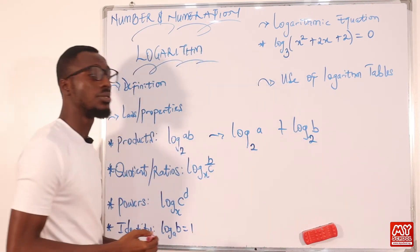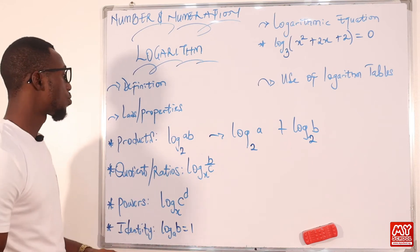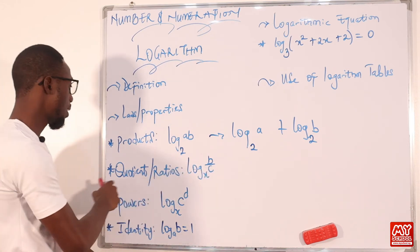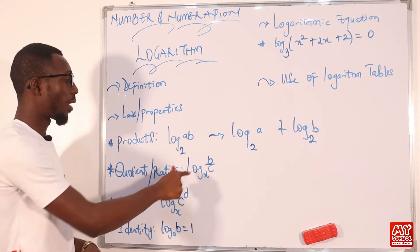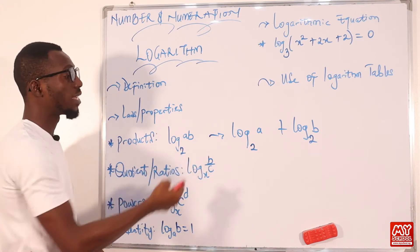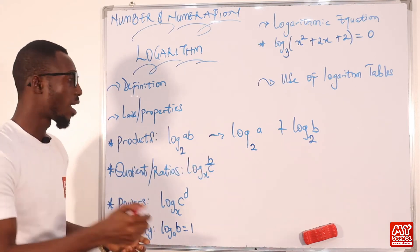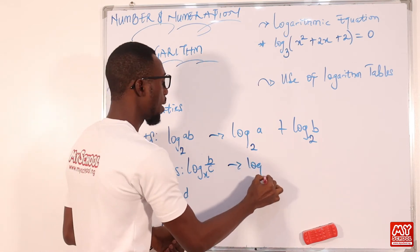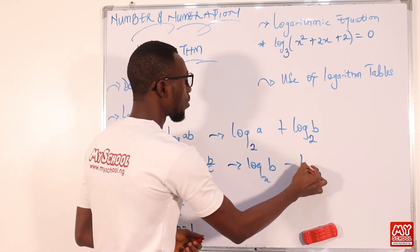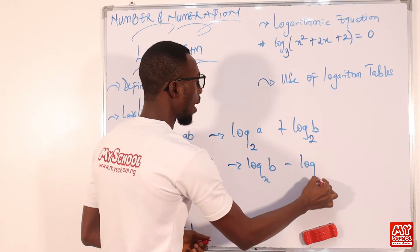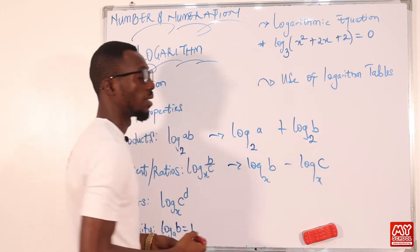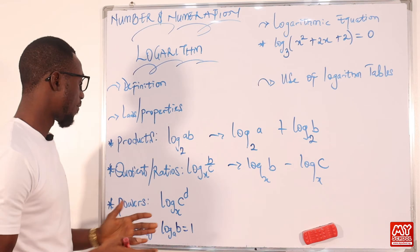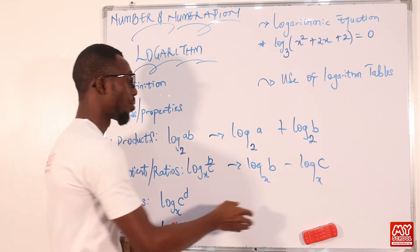For the quotient or ratios law, when we have a fraction — meaning division — we change the division to subtraction. So log base x of (b ÷ c) becomes log base x of b minus log base x of c. Very easy.